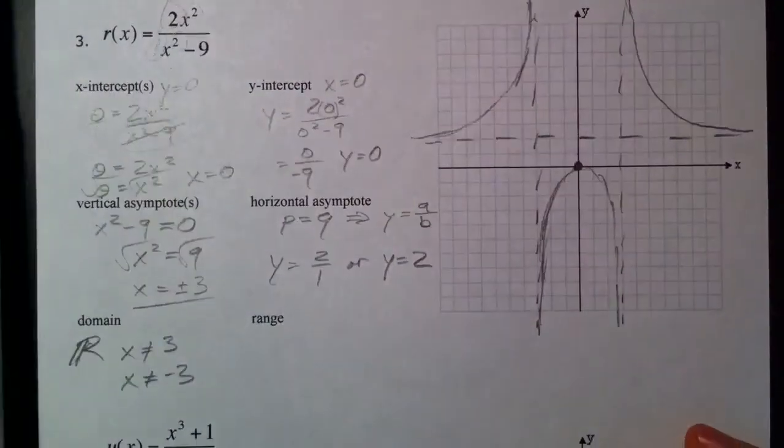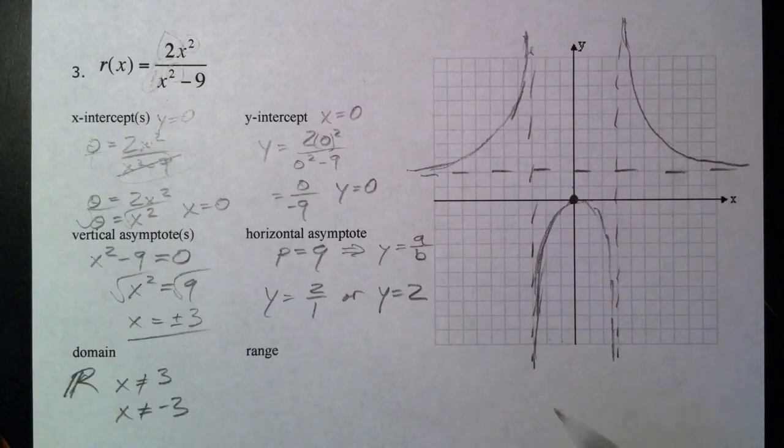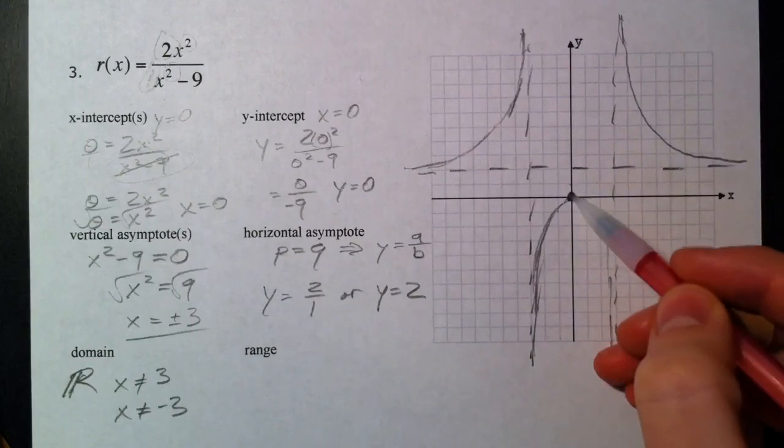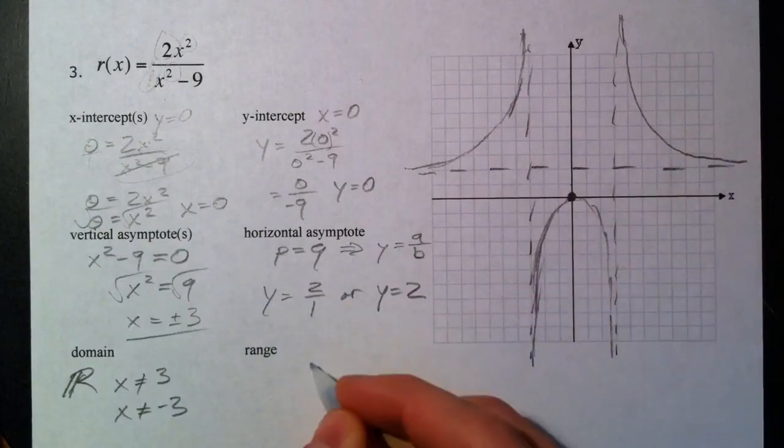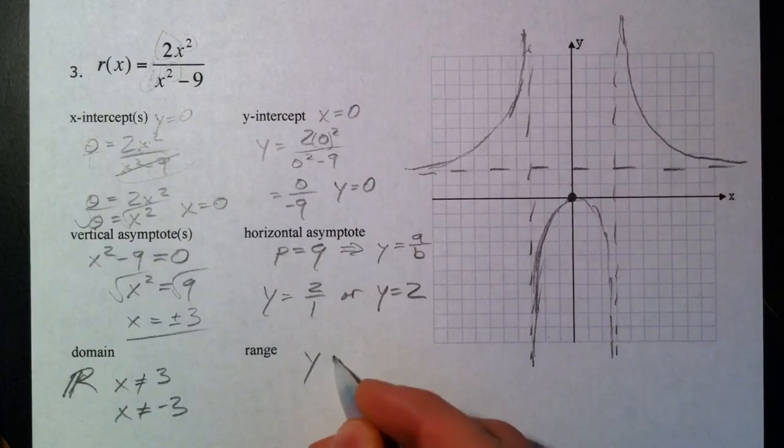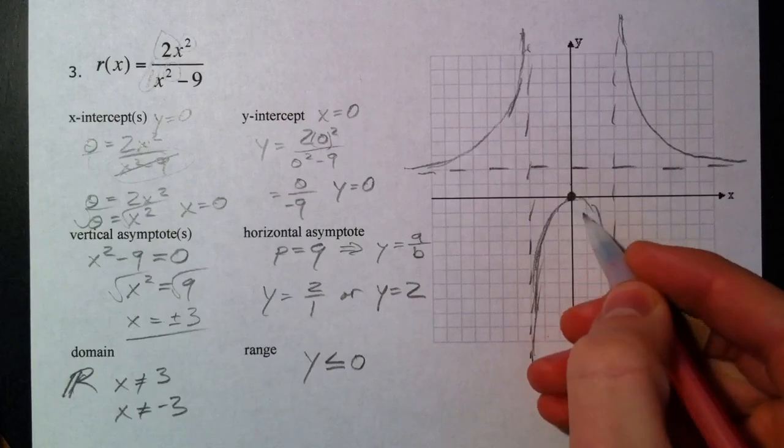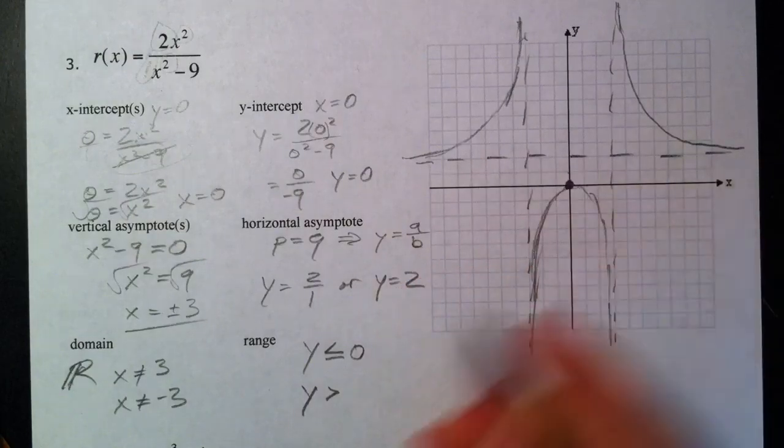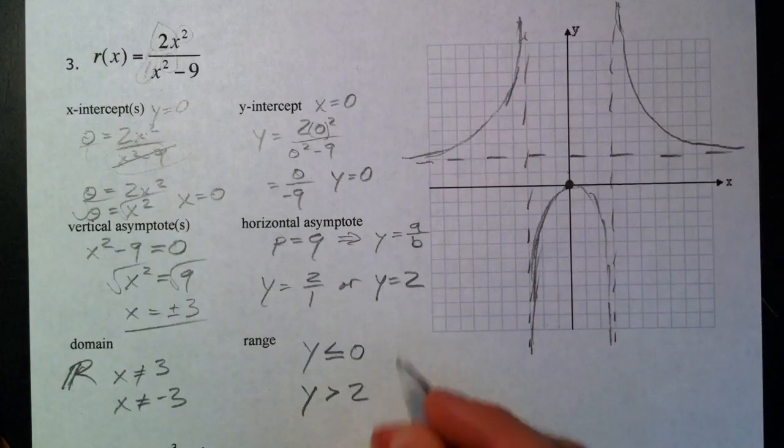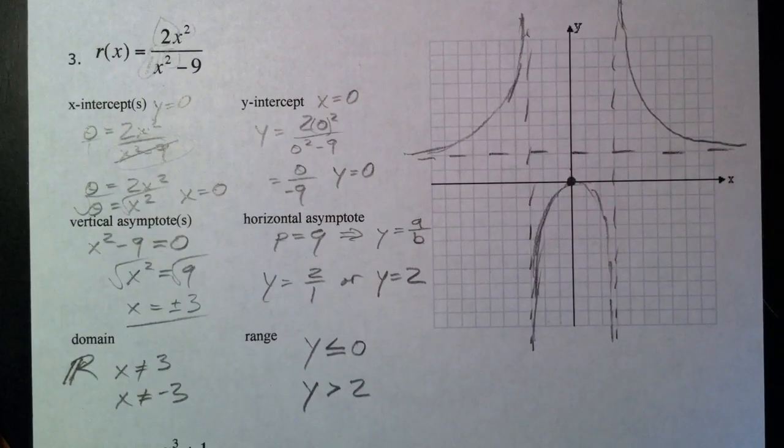So what is our range? Our range, it starts from the bottom and goes up to 0, and then it doesn't have anything in between here. And so y is going to be less than or equal to 0 because it actually reaches 0, and then y is going to be greater than 2 because it never actually reaches the 2. One more example.